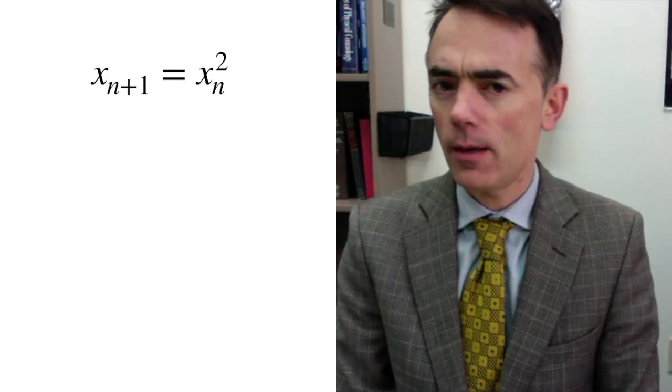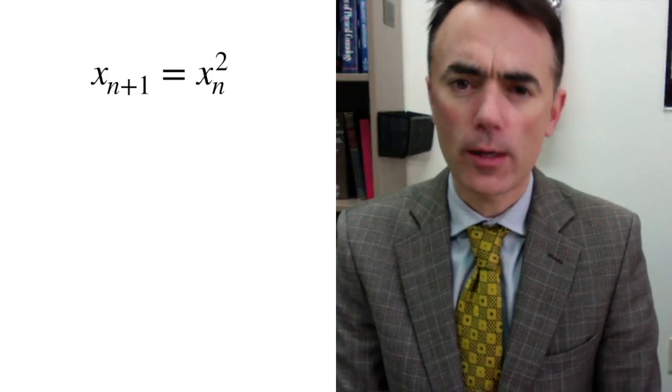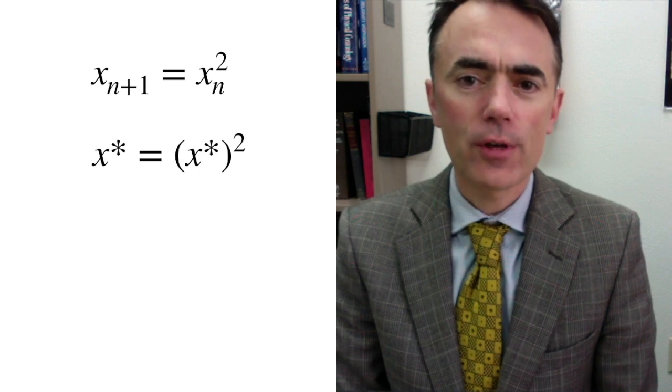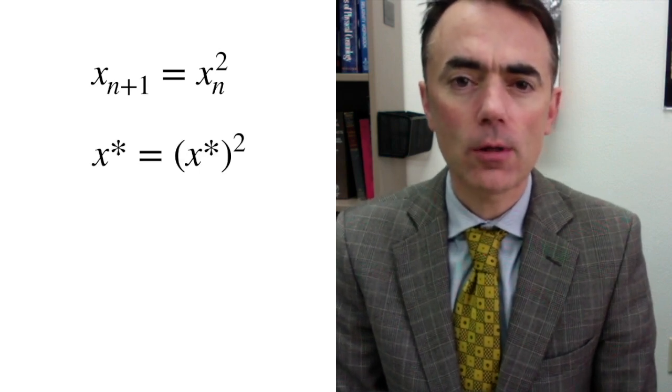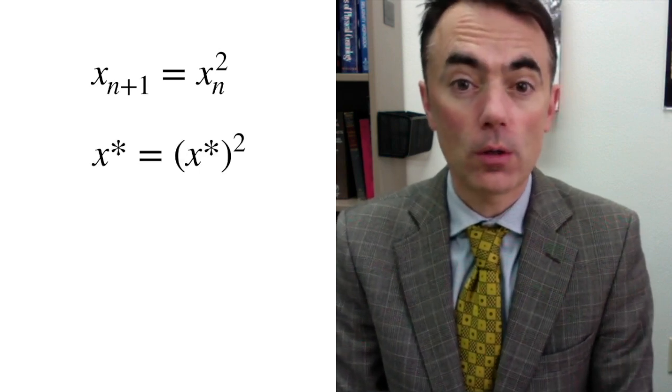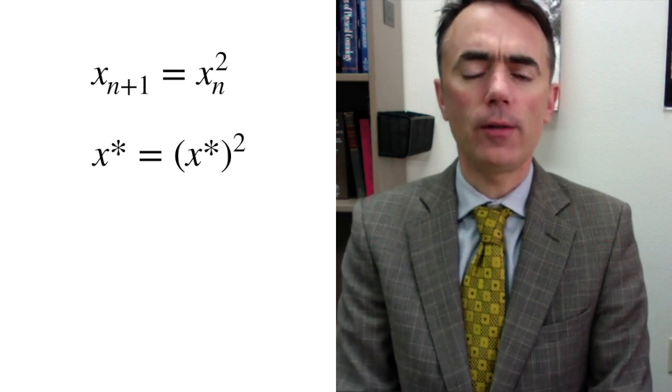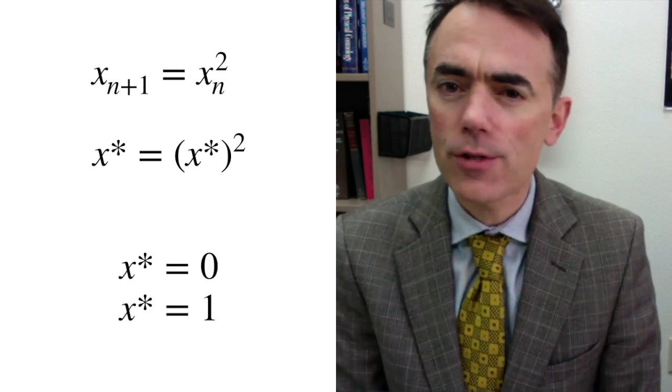Let's do some math on the example of the square on the calculator. The map is written as x sub n plus 1 equals x sub n squared. For fixed points, we have that x star equals x star squared. We solve this equation and find that x star can be either 0 or 1.